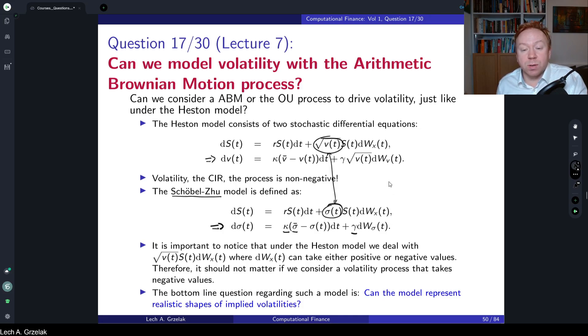So this kind of model is much simpler than the Heston model, at least it looks like it is. The question is, does it make sense to have volatility be normally distributed?